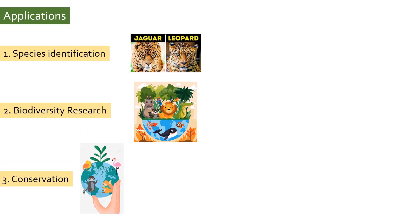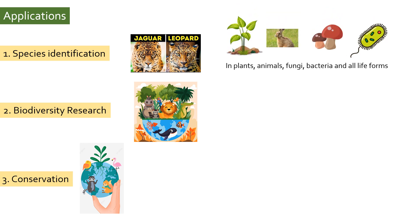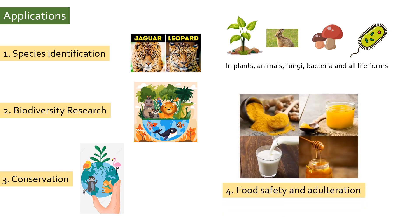DNA barcoding also has its application in conservation. Over time, the distribution and existence of a particular species may change due to human interference, climate change, or other factors. DNA barcoding can be used to monitor changes in the distribution and abundance of different species over time, helping to identify areas that are particularly important for conservation. It can also be used to verify the identity of food products and check if products are properly labeled and free from contaminants and adulterants.